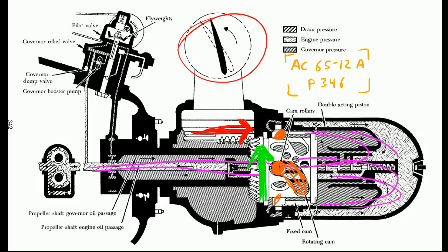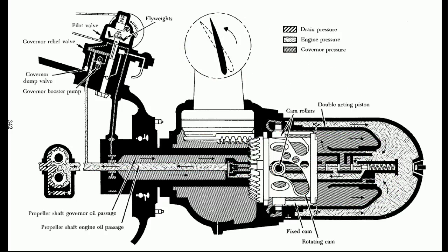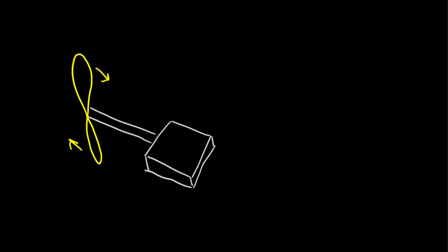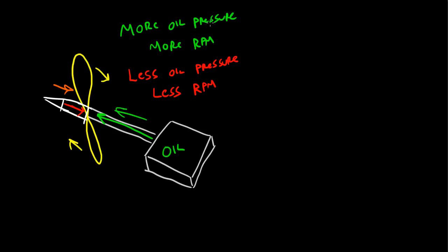So, refer to AC 65-12A, page 346, if you want a detailed description of this. For now, it's worth it just to say that, if you want the blades of the propeller to speed up, you need to reduce their angle of attack and reduce their drag. If you want the RPM of the propeller to slow down, you need to increase the angle of attack of the blades, and therefore increase the drag. And, to do that, you need to push more oil pressure into the hub, and you'll get more RPM. Or, you need to have less oil pressure in the hub, and then you'll get less RPM.